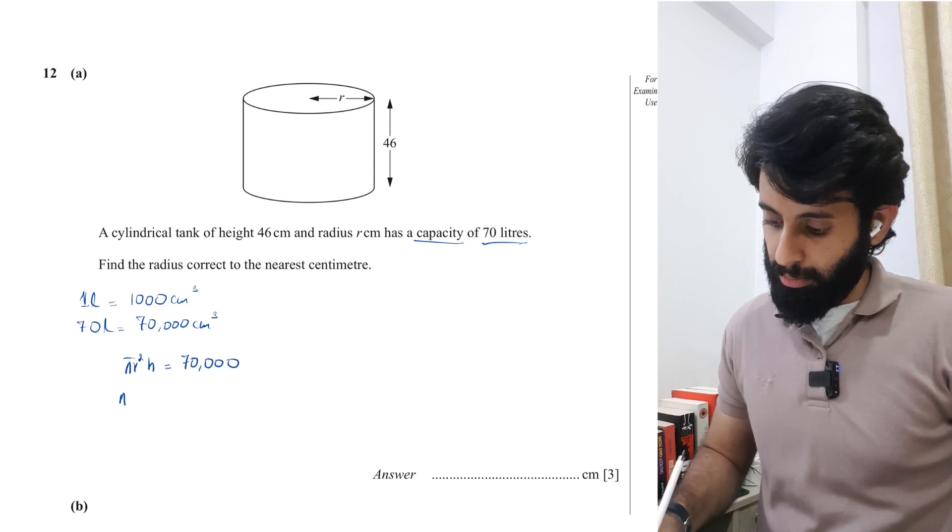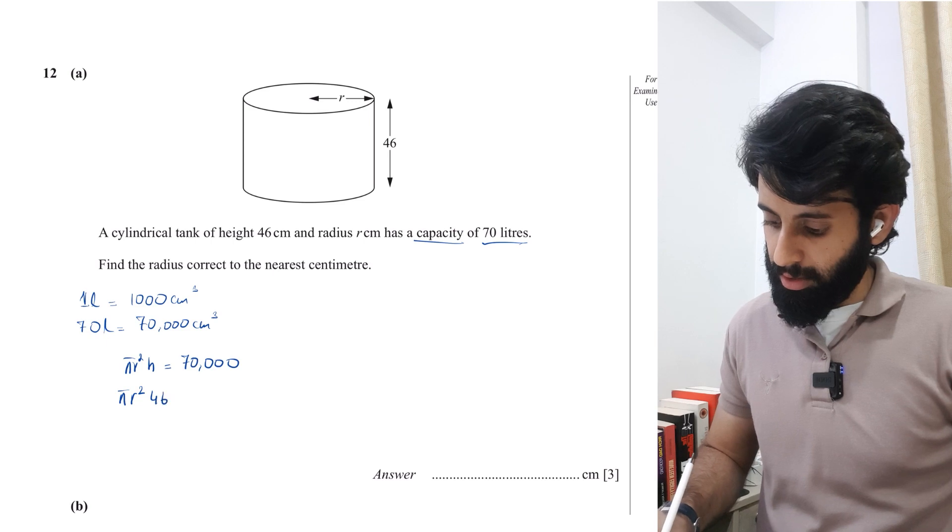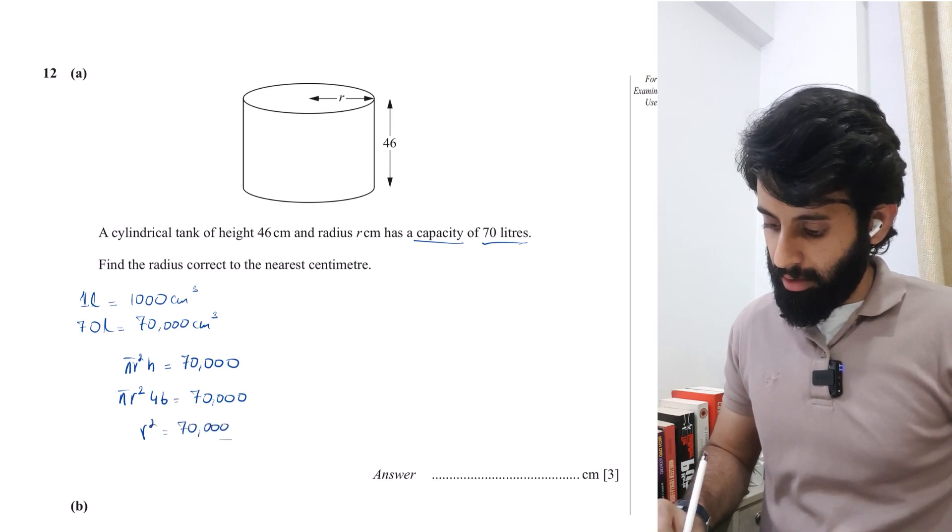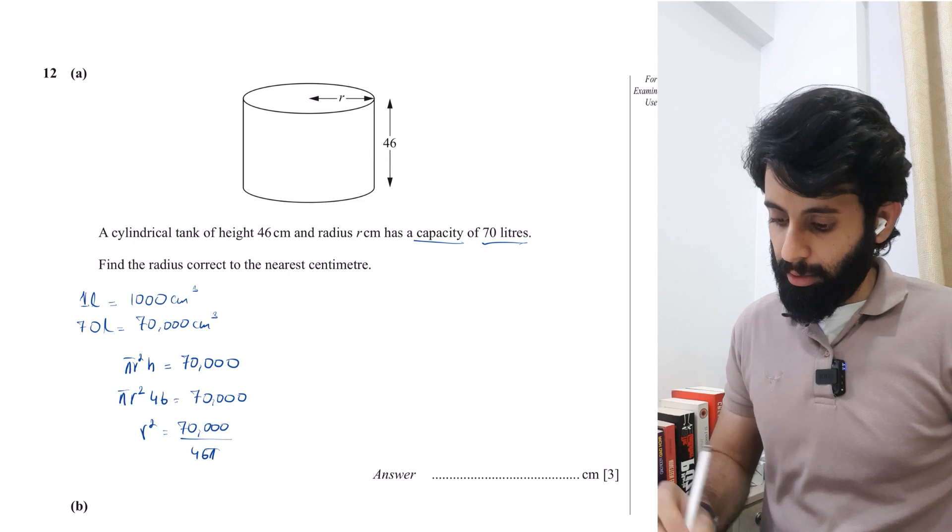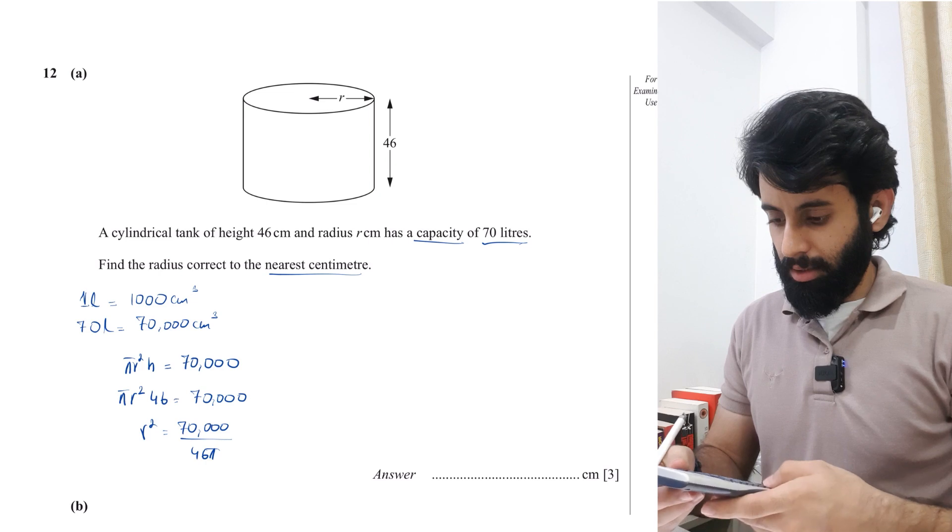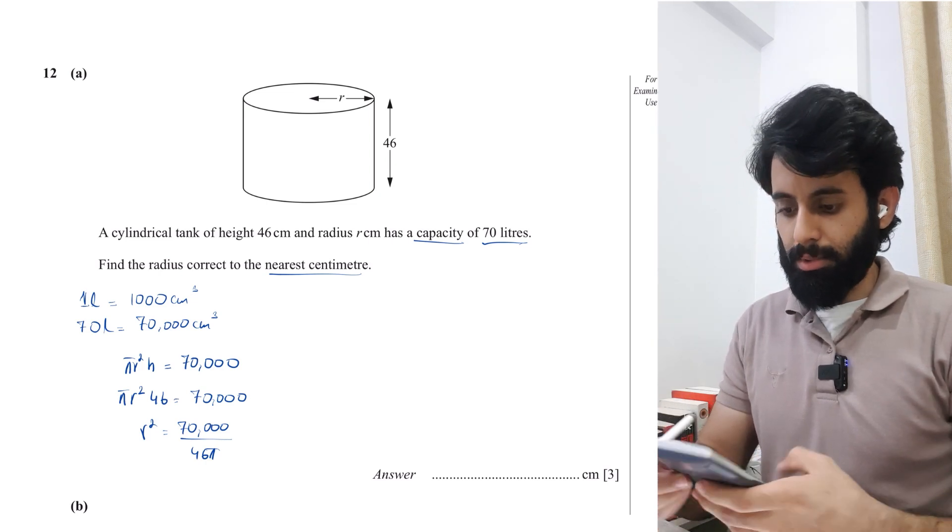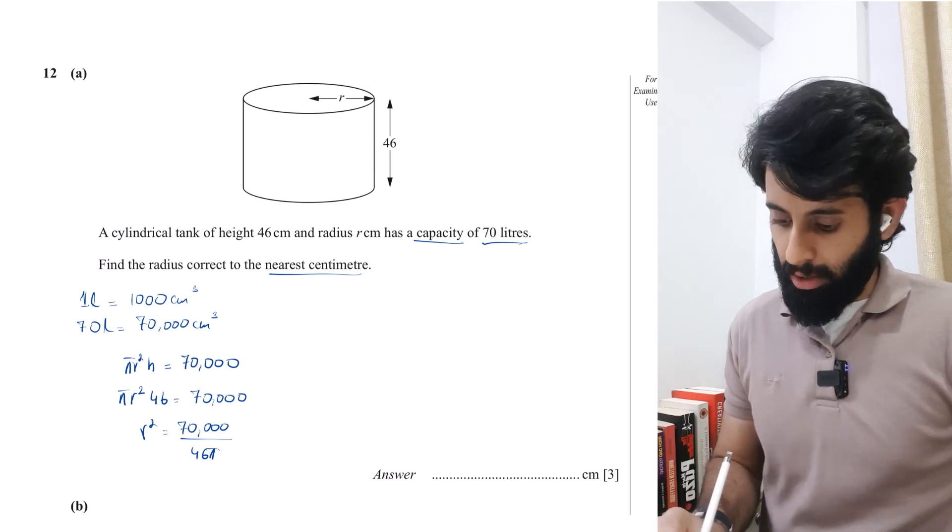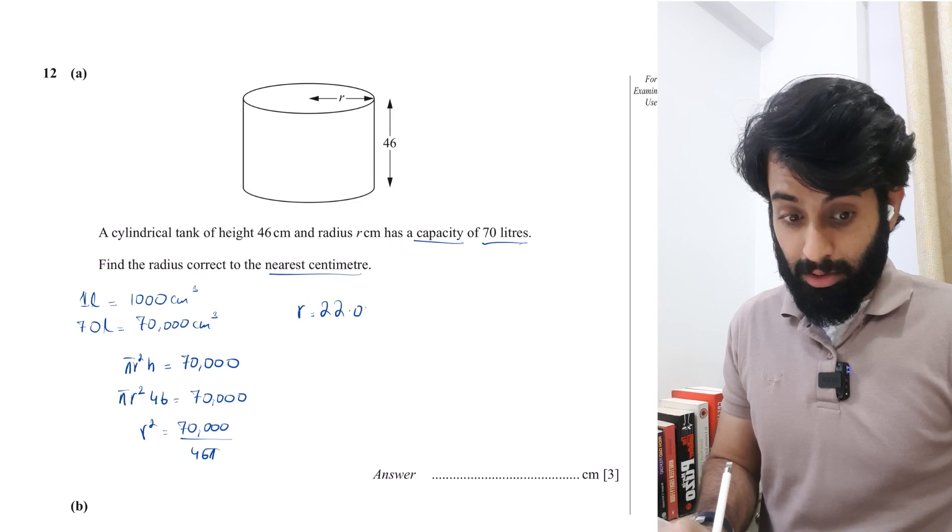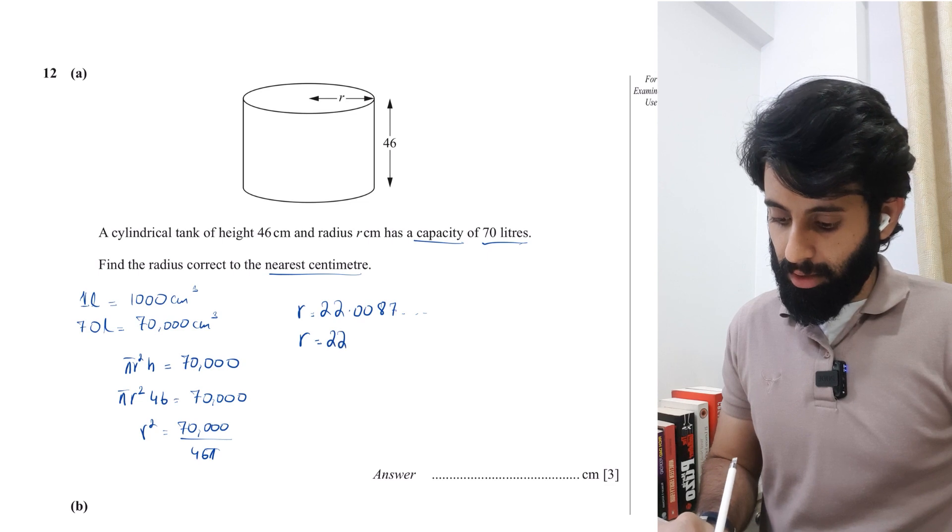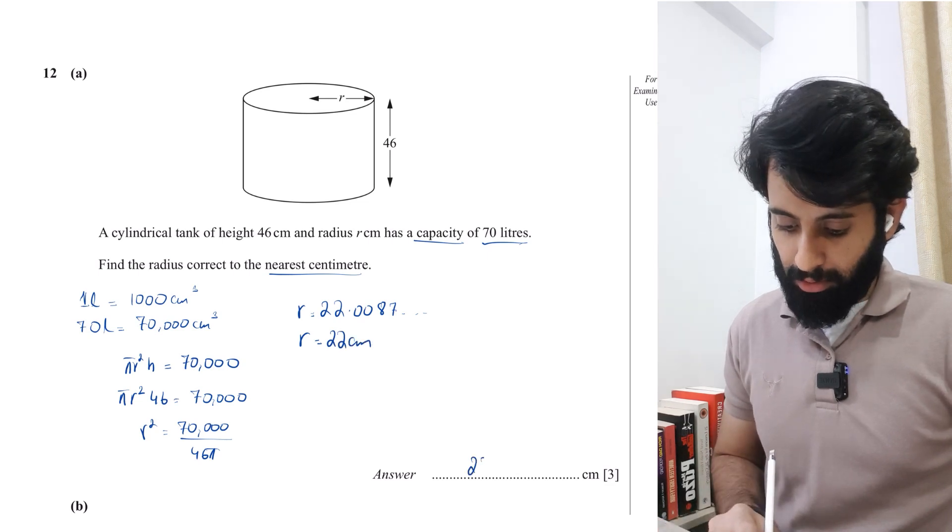So πr² times height 46 equals 70,000. Grab your calculators and r² is going to equal 70,000 divided by 46π. Remember you have to give your answer correct to the nearest centimeter. So 70,000 divided by 46 times π, I'm looking at 484.3 something. Let's find the square root, so r equals 22.0087 and so on. Correct to the nearest centimeter, it's going to be 22 centimeters. Not too difficult.